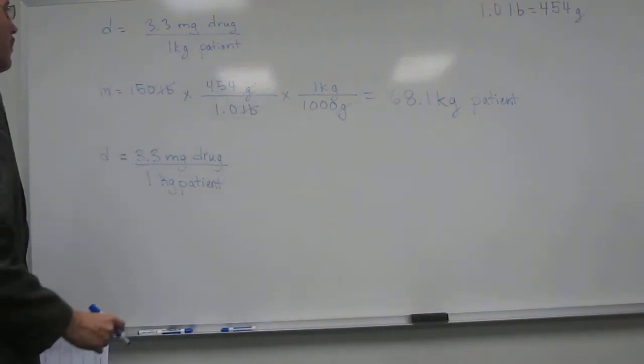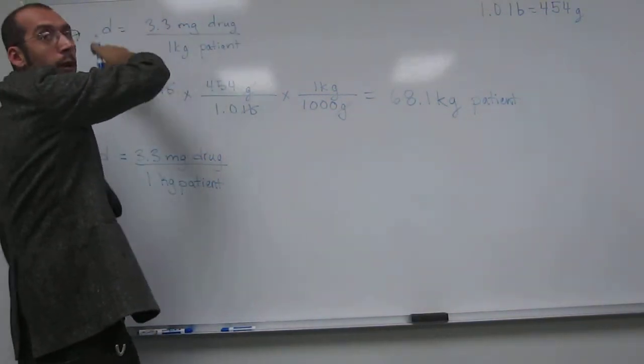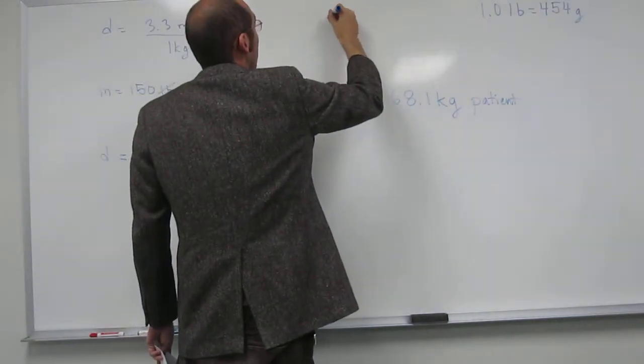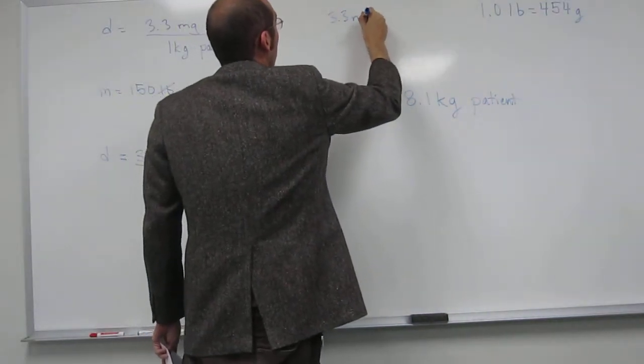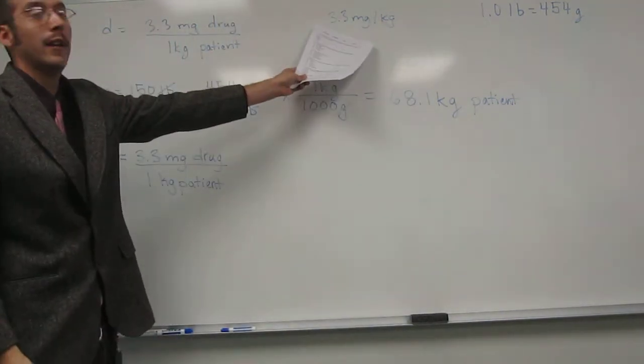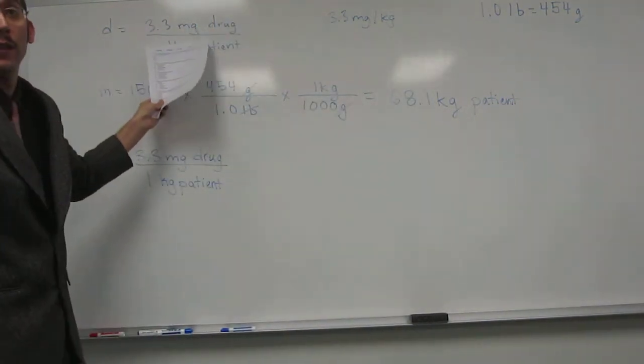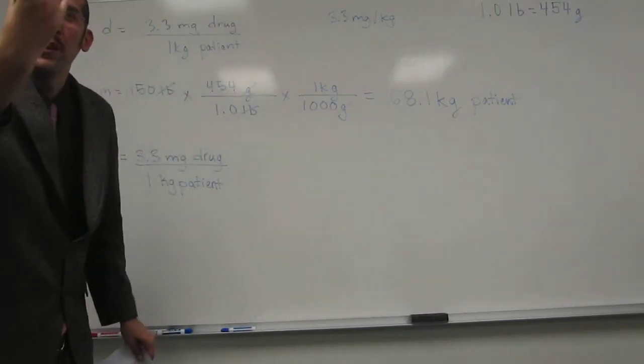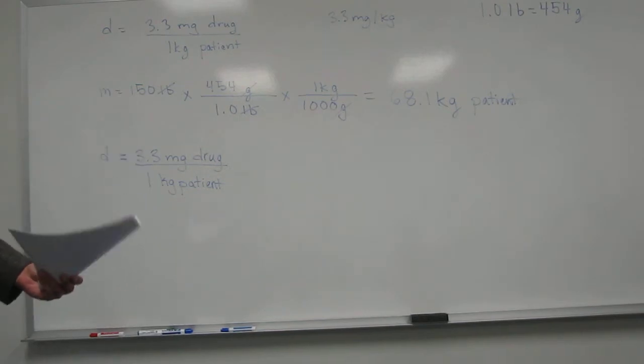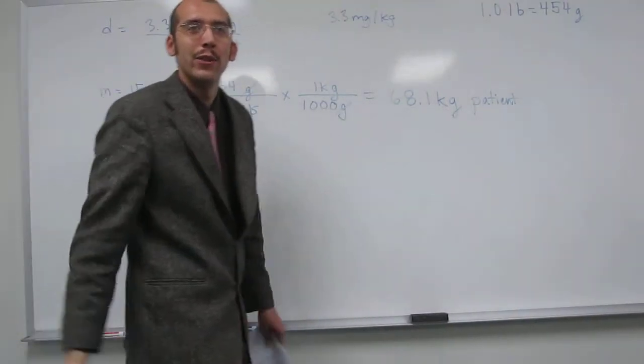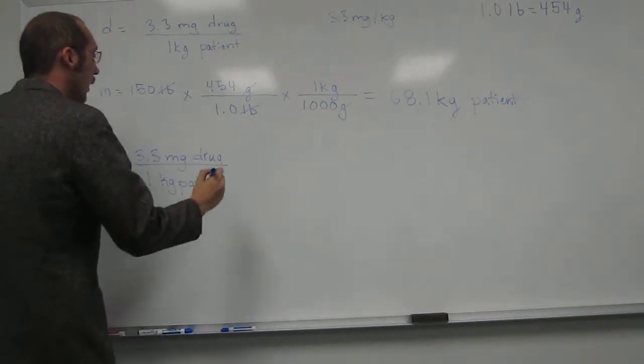The last thing I'd like you to remember is this wasn't written this way in the problem. It was written that the dosage is 3.3 milligrams per kilogram. So, the first step we had to do is convert that to what this is. This is more recognizable as something that we can cancel out and stuff. This is kind of the shortcut or the text message way of doing it. Remember?